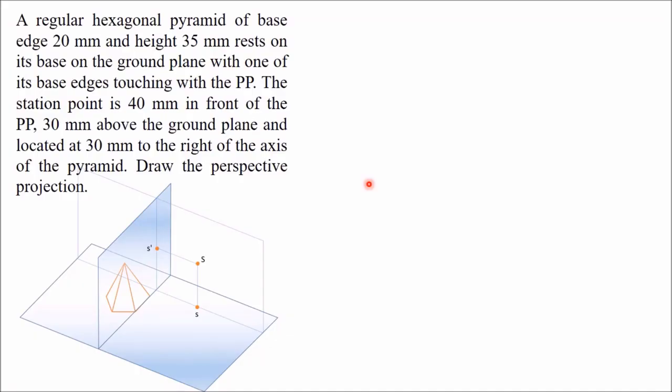Hello, in this video I will explain how to draw perspective view of a hexagonal pyramid using its top view and side view. In my previous video we drew the isometric view of a square prism using its front view and top view. You can use any two of the three views — front view, side view, and top view — for drawing the perspective view of an object.